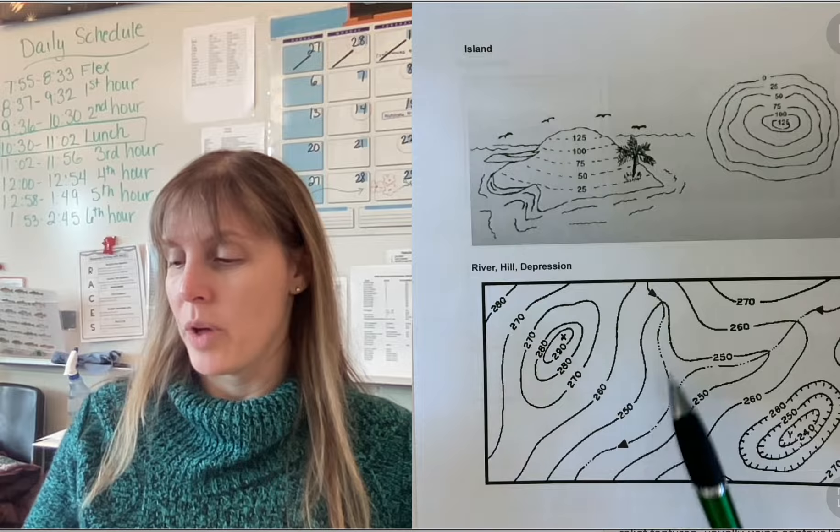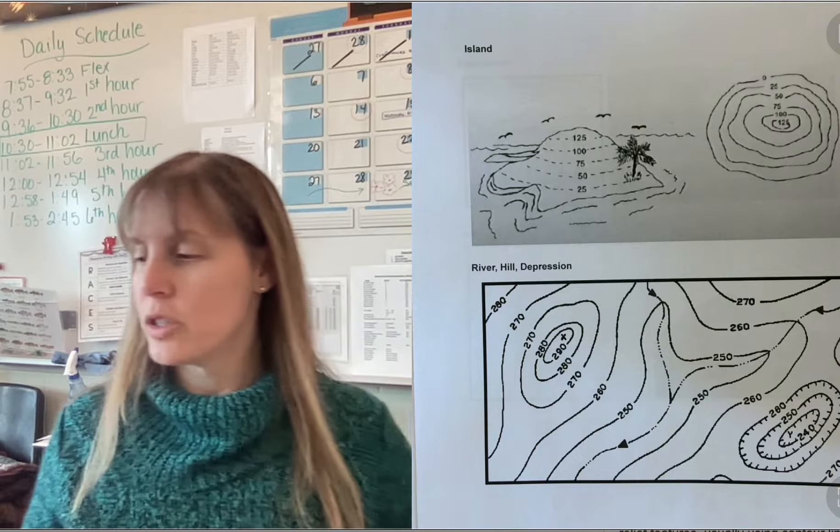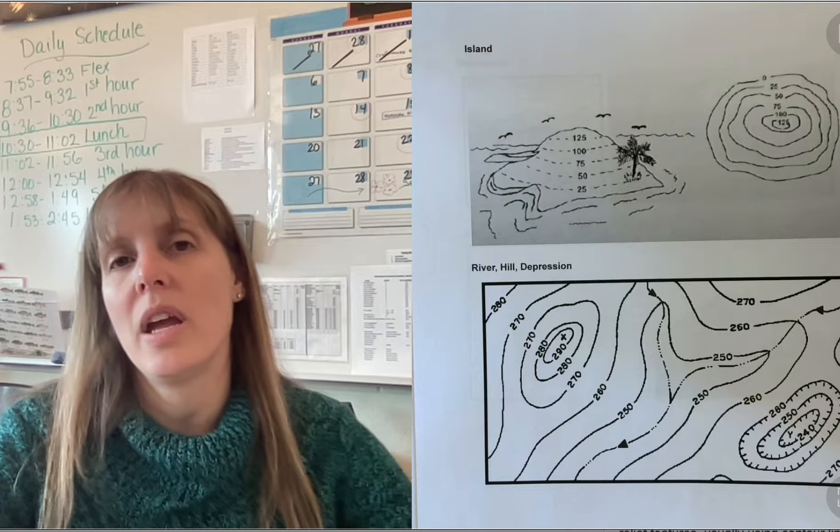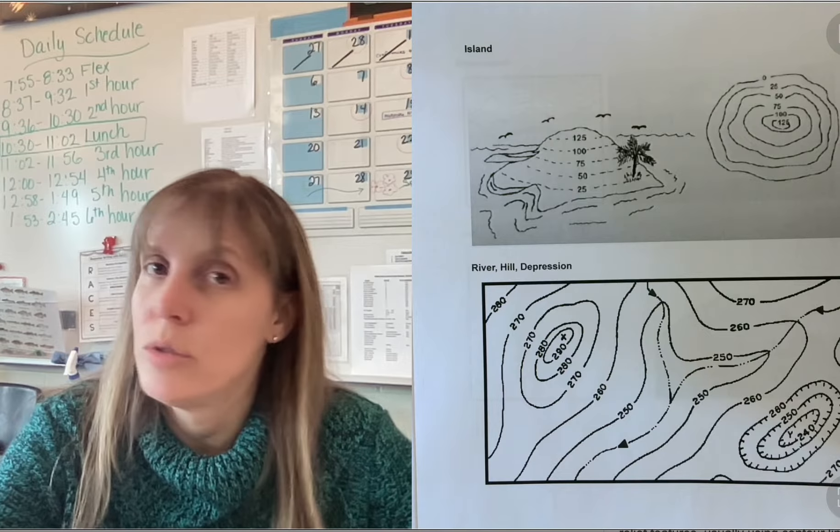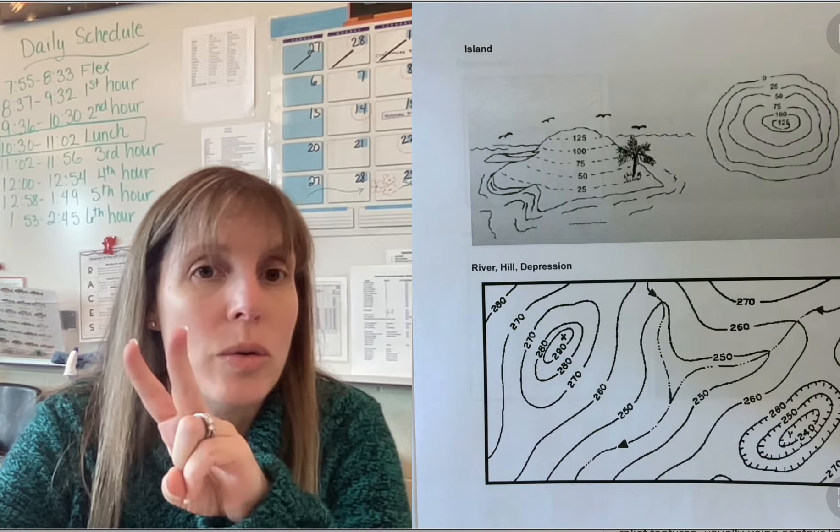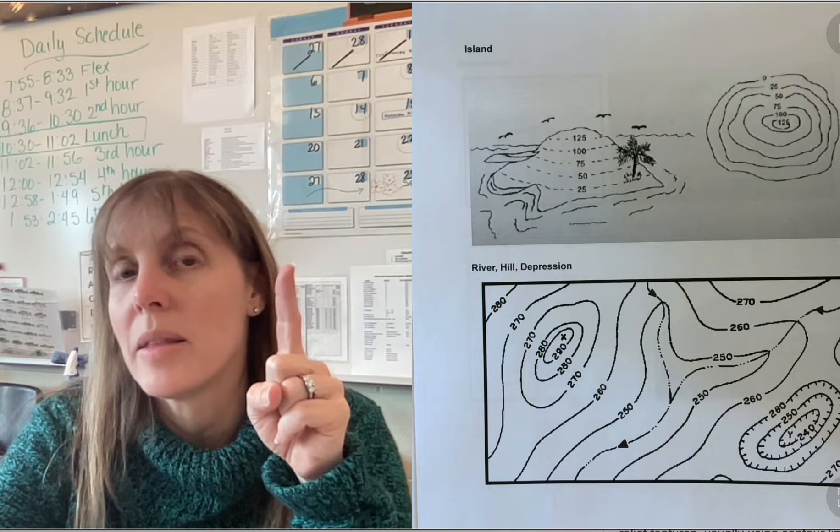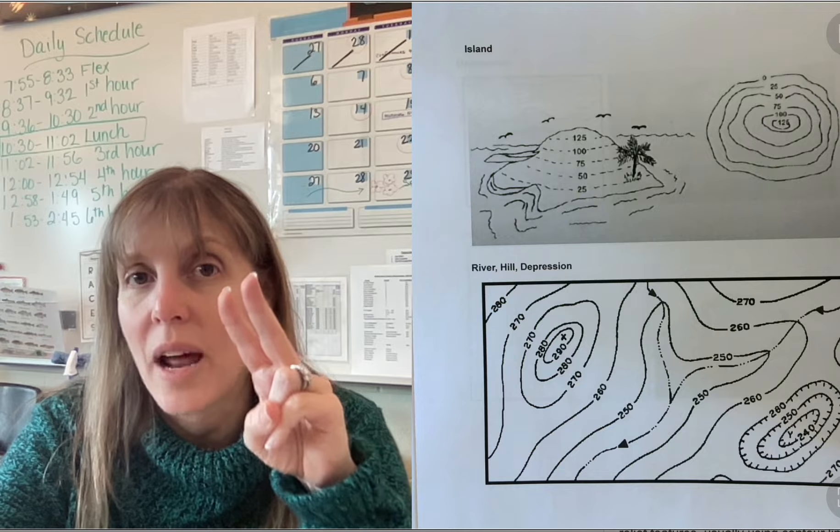You could do one with a river. This one has a river in it. And so pick one that you think you and your partner, or you do not have to have a partner, but you can only have one partner. Not two. One partner. So we can either have one person working by themselves or two people working together. Okay?